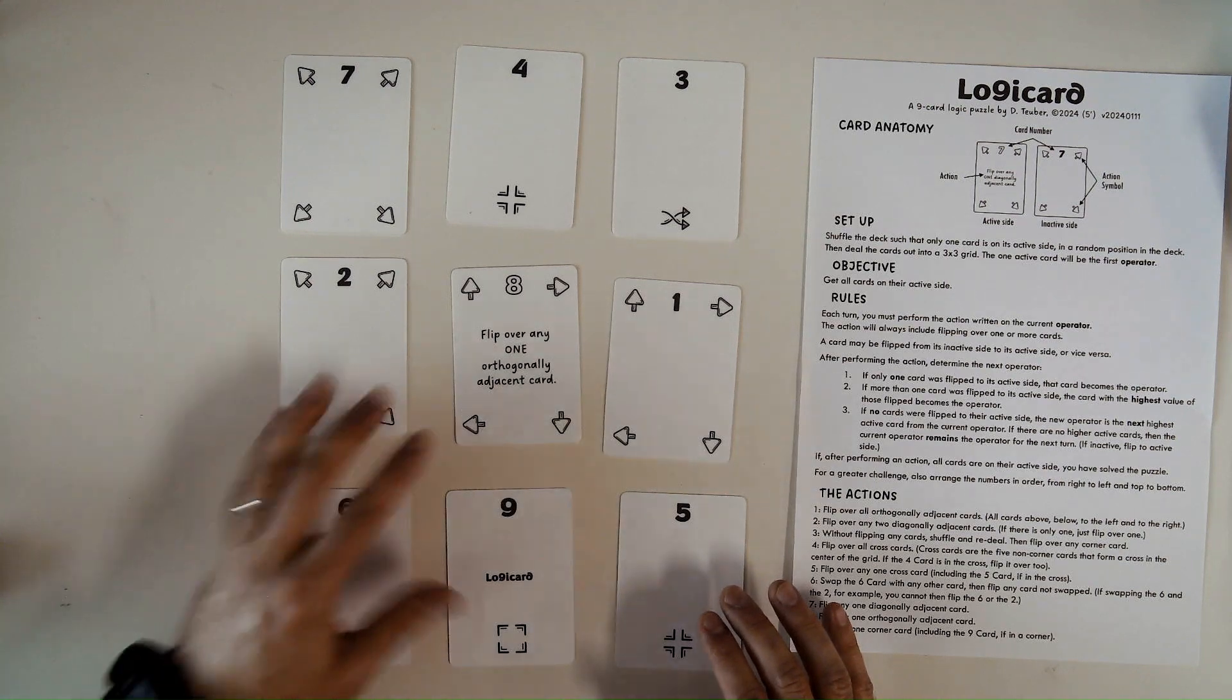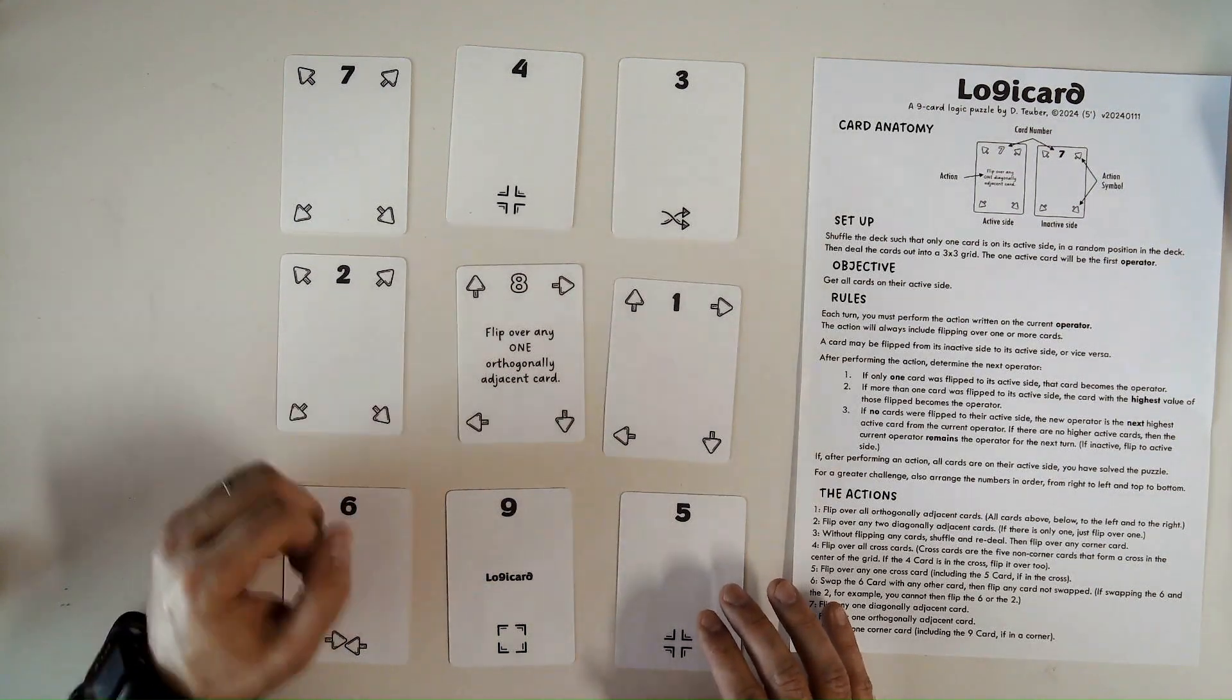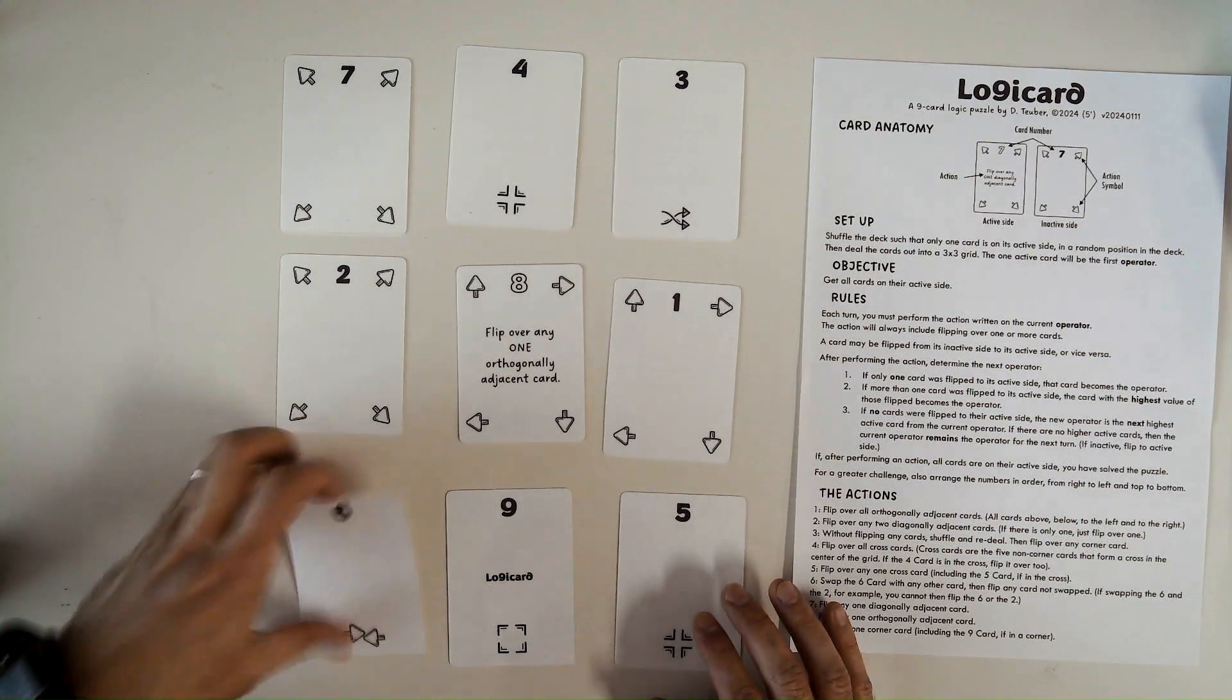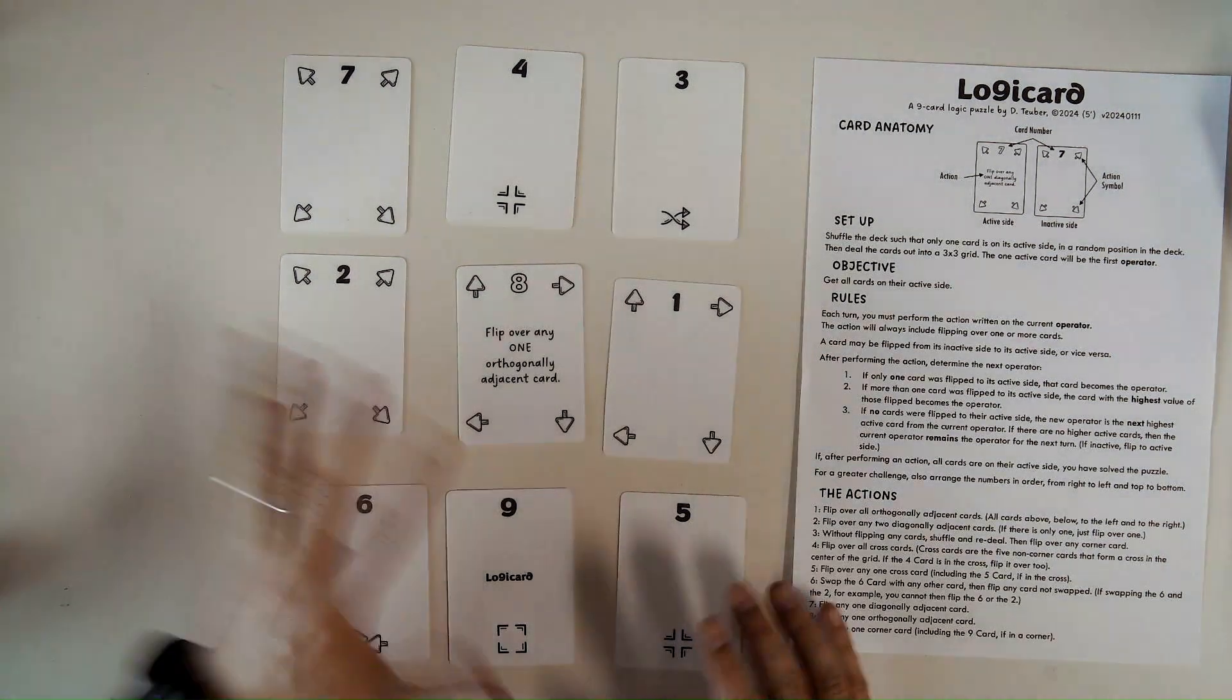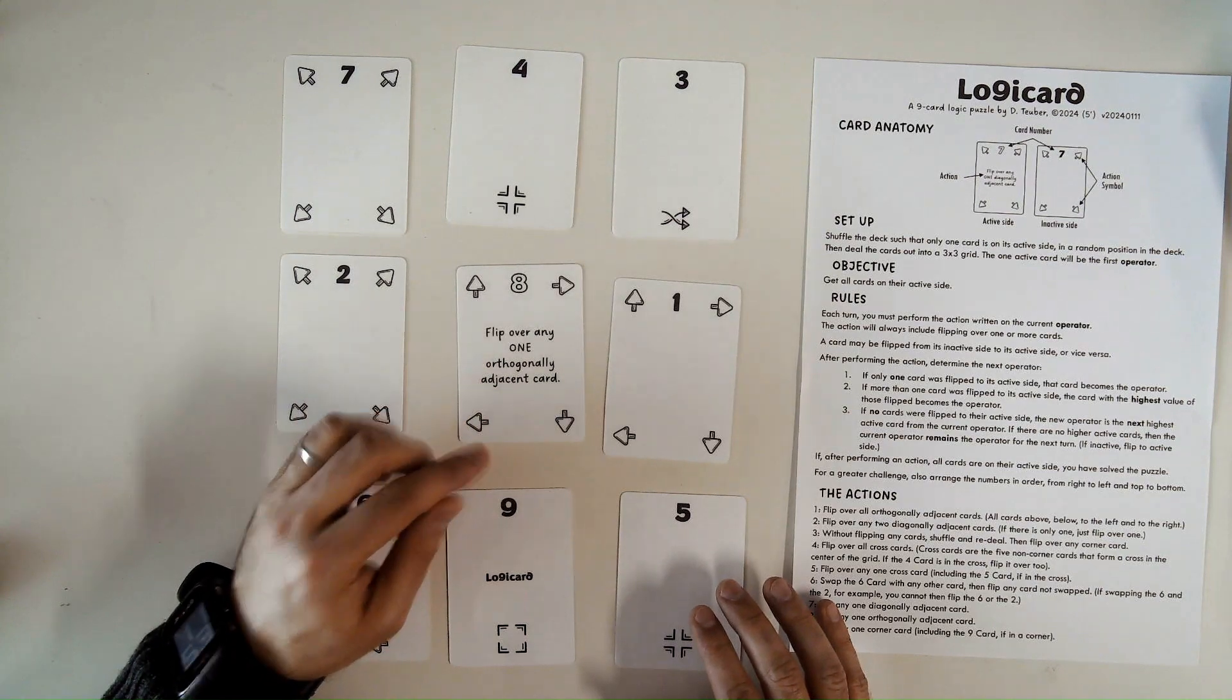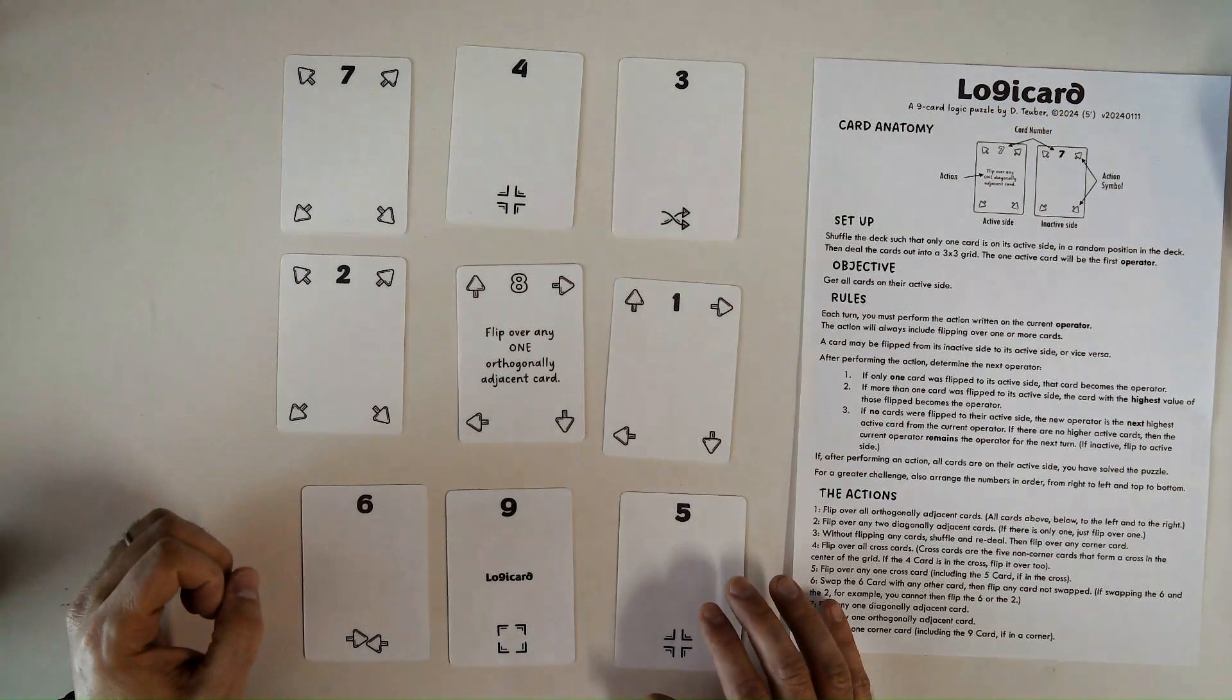and each card has an active side and an inactive side. So at the start of the game, you put all the cards on their inactive side, which has the black number and no words on the side, and you shuffle them up. You'll choose one at random, flip that over to the active side, shuffle them again, and then lay them out in this 3x3 grid.